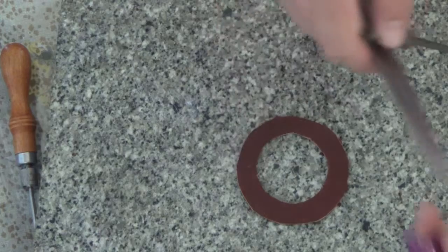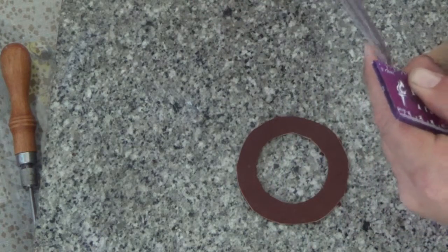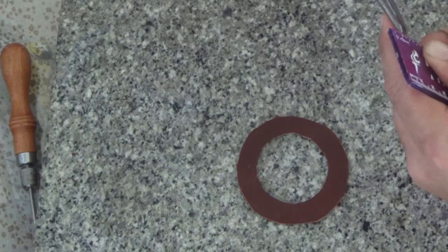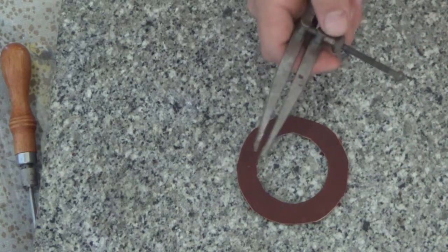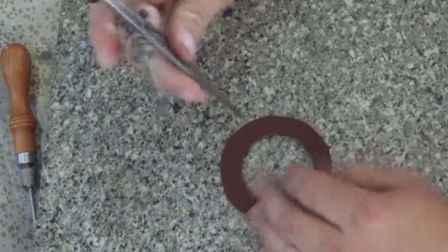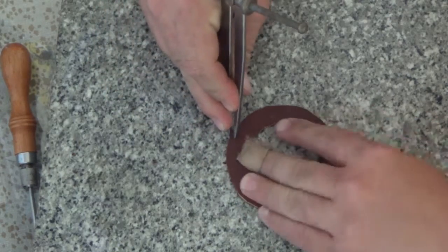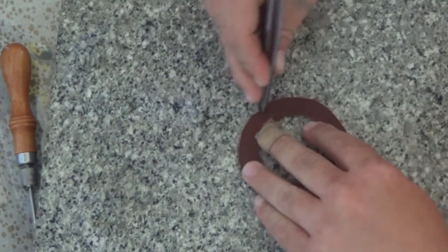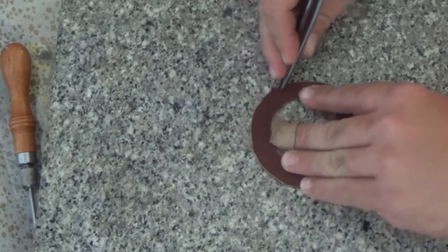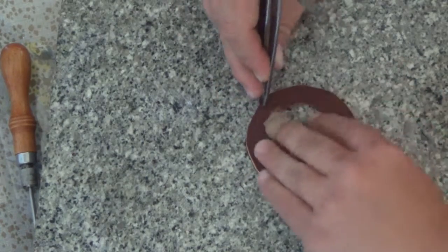Then, you set your calipers to about a quarter of an inch. Then you take the caliper and you lay one point of it on the outside edge of the leather and you scribe a circle around the outside edge. This is where you're going to be putting your stitches.